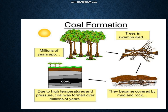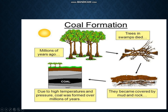Now let us see how coal is formed. It is a fossil fuel formed from the dead remains of living organisms. About 300 million years ago, the earth had dense forests in low-lying wetland areas. Due to natural processes like flooding, these forests got buried under the soil. As more soil deposited over them, they were compressed and became covered by mud and rock.